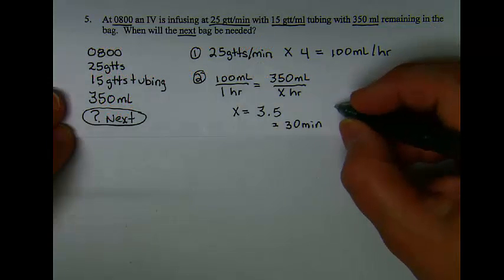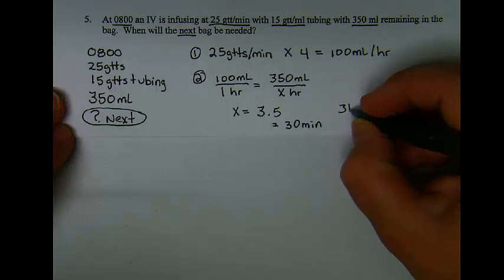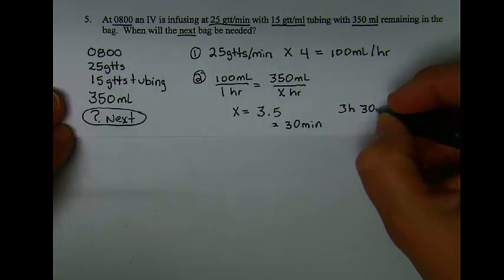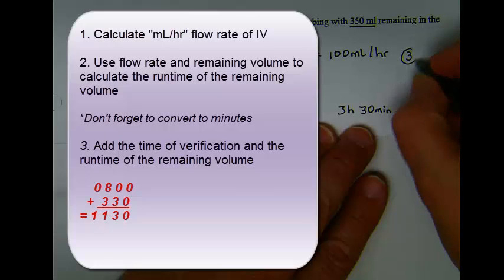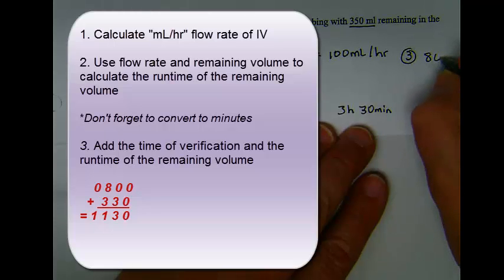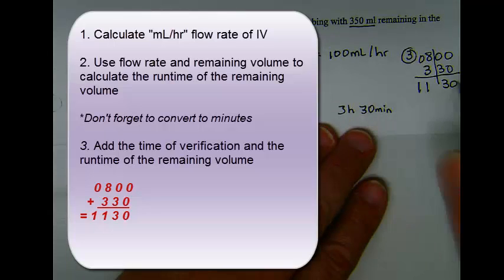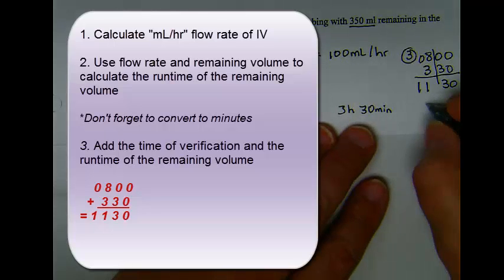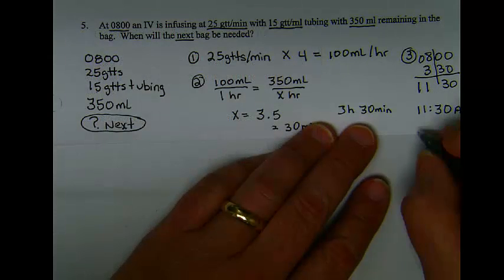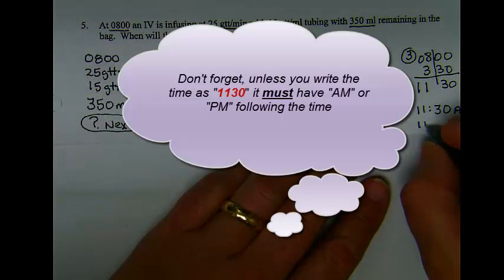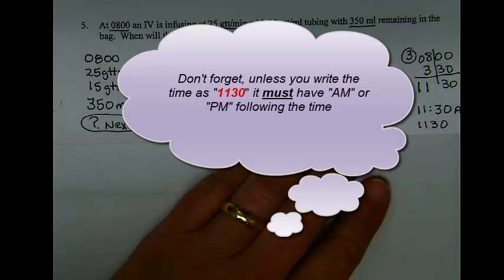If the total run time is 3 hours and 30 minutes, this must then be added in the last step to the time this was verified. According to this, the next bag will be needed at 11:30 a.m., or 1130 hours.